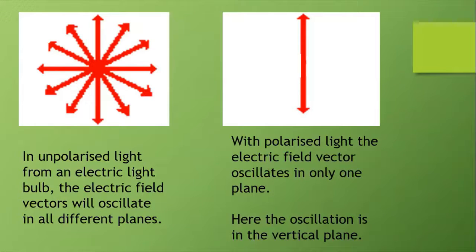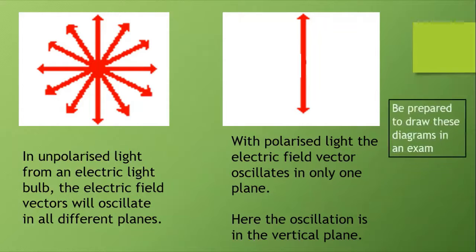In unpolarized light the electric field vectors will oscillate in all different planes as they're coming towards us, as shown in the diagram on the left. But with polarized light, plane polarized light, the electric field vector oscillates in only one plane. Here the oscillation is in the vertical plane, though it could have been in the horizontal plane. We have to be prepared to draw these two diagrams in an exam.